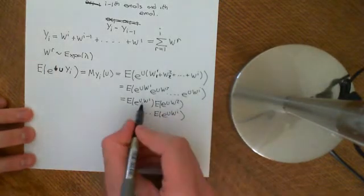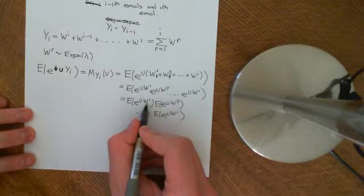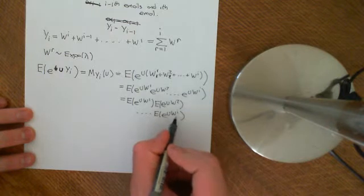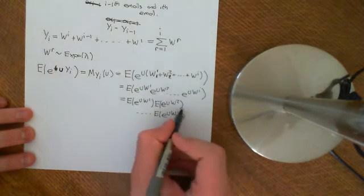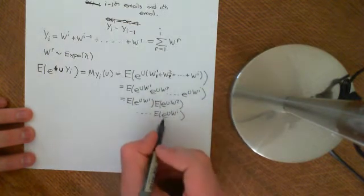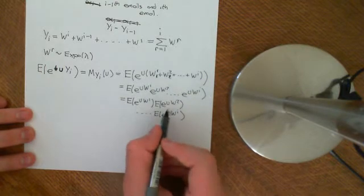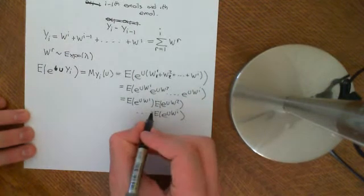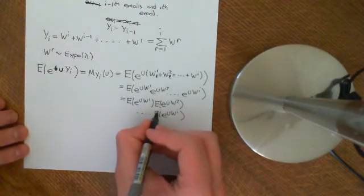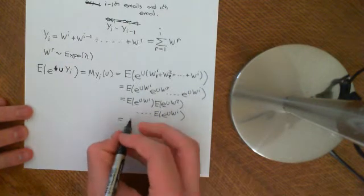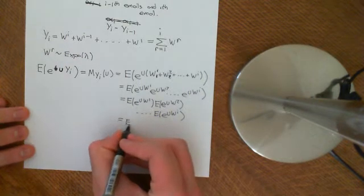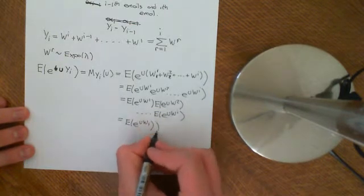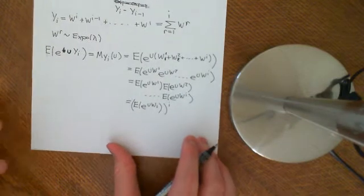All of these moment generating functions are going to be identical, because they're all identically distributed, so their moment generating function should be the same. What we need to do is work out the moment generating function for an exponential distribution and raise it to the power of i. So it's the expected value of e^(u·w1) — the moment generating function of w1 — to the power of i.